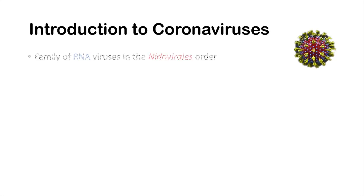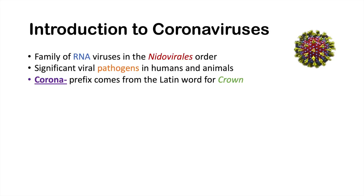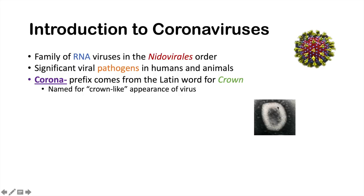Coronaviruses are a family of RNA viruses in the order known as Nidovirales. They are significant viral pathogens in both humans and animals and can cause significant disease. The word coronavirus — the prefix 'corona' — comes from the Latin word for crown, named for the crown-like appearance of the virus. Here is an electron microscope image of a coronavirus; these membrane surface proteins give it a crown-like look.